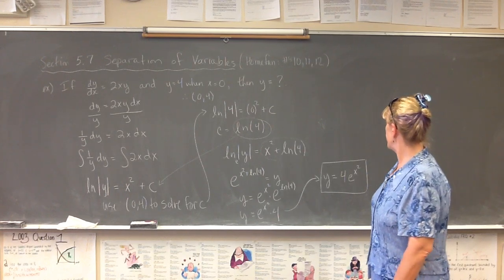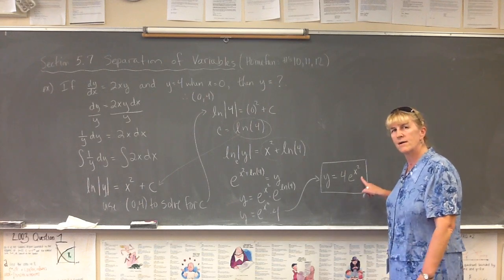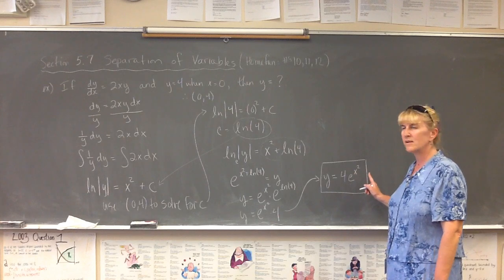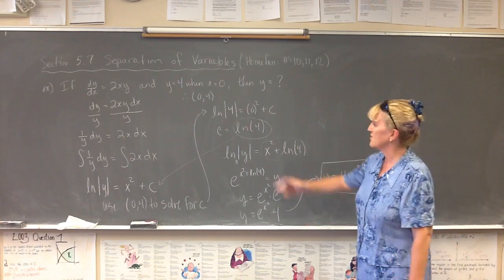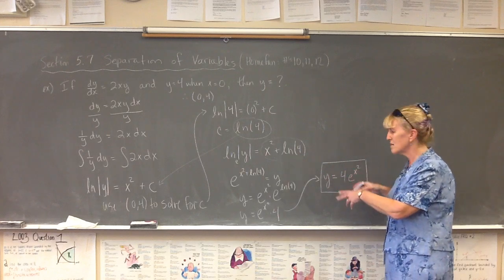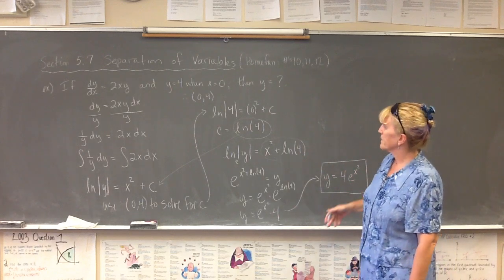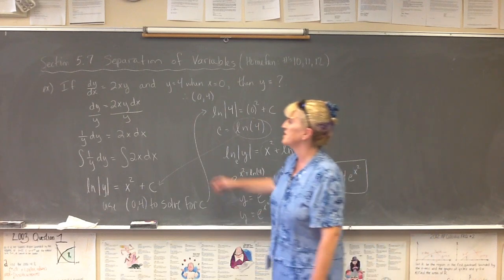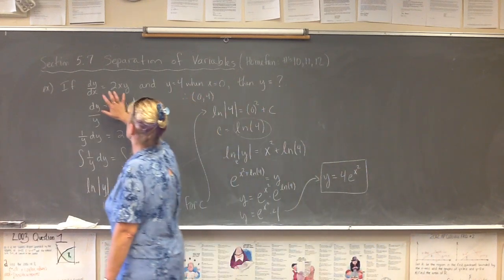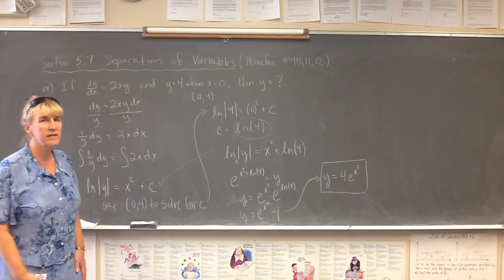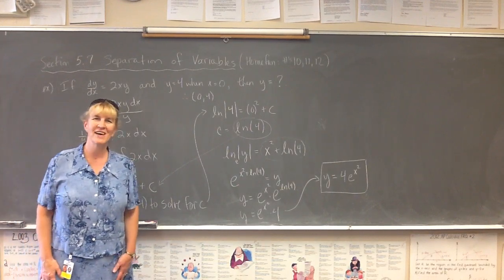Pretty simple process. Now, I want you to think about why you don't have a plus c on the end of this. We don't have a plus c because didn't we solve for c? It wasn't c in the natural log of 4. So isn't that c embedded in here? And we're looking for a particular case. All right? We're looking for a particular solution to this differential equation. All right? That's my one example. Good luck on your homework. Talent out.